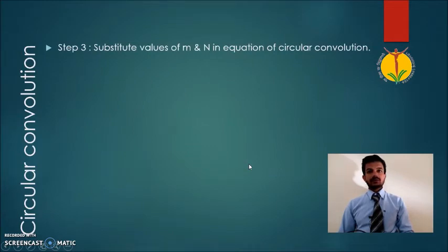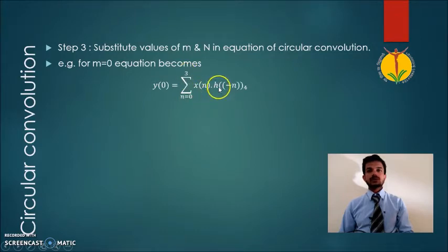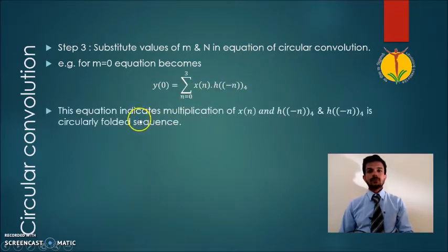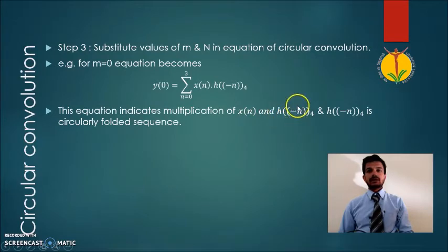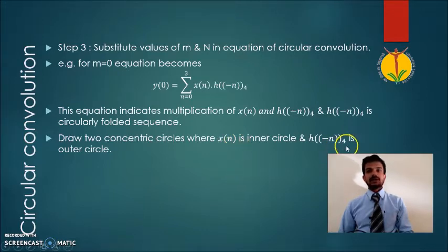Let us substitute different values of m and n in the circular convolution equation. For example, substituting m equal to 0, the equation becomes y of 0 equals summation from n equal to 0 up to 3 of x of n times h of minus n. This indicates the multiplication of x of n and h of minus n, where h of minus n is nothing but the circularly folded sequence of h of n. In the next step, we draw two concentric circles where x of n is the inner circle and h of minus n is the outer circle.